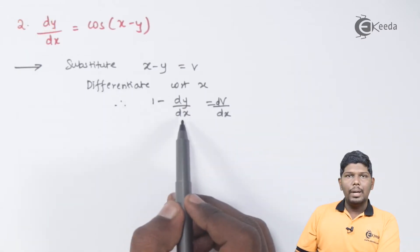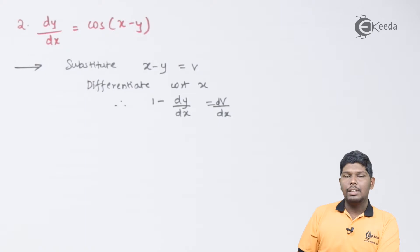That will give you 1 minus dy by dx equals dv by dx. From this step, we need to find the value of dy by dx.